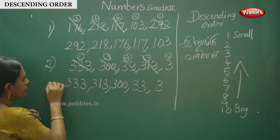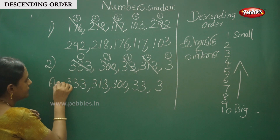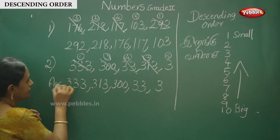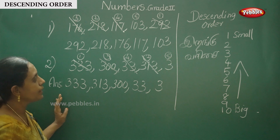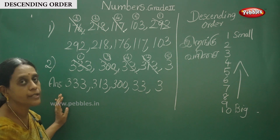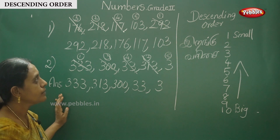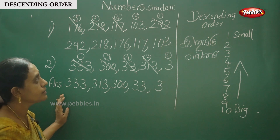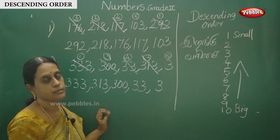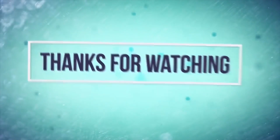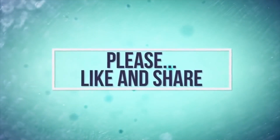Strike out 333, strike out 313, strike out 300, strike out 33, and finally 3. This is the answer. This is the way to find out and clarify the descending order. That's the way to find out. Thank you, everybody.